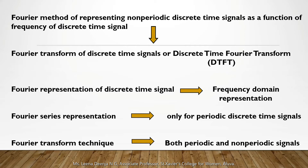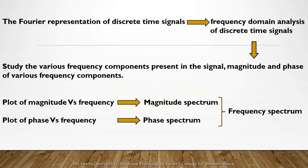In general, the Fourier series representation can be obtained only for periodic discrete time signals. But the Fourier transform technique can be applied to both periodic and non-periodic signals to obtain the frequency domain representation. This representation can be used to study the various frequency components present in the signal, including the magnitude and phase of each component. The graphical plots of magnitude and phase as a function of frequency are called the magnitude spectrum and phase spectrum respectively, and together they are called the frequency spectrum.